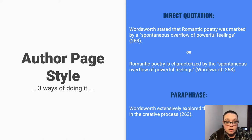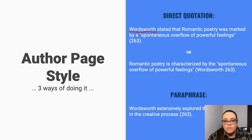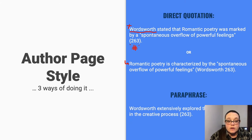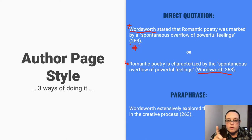Here you see that the author is introduced in the sentence: 'Wordsworth stated that romantic poetry was marked by a spontaneous overflow of powerful feelings' — then parentheses with the page number. You don't need to put P or PG or anything like that, just the number. Wordsworth is mentioned in the sentence. In a very similar sentence — 'Romantic poetry is characterized by the spontaneous overflow of powerful feelings' — the author is not mentioned in the sentence itself, so it is mentioned in the in-text citation at the end: (Wordsworth 263).